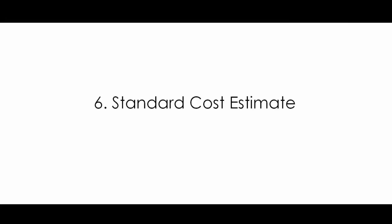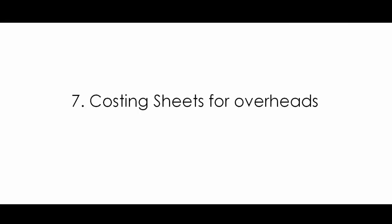The product cost calculator is another tool we discussed in a previous video, used to calculate the cost of products - it is another interface between the material master and the CO module. Standard cost estimate is also used to update pricing for production orders, providing another integration between CO and PP. The costing sheet for overheads is another costing type used to check overhead costs in the PP module.